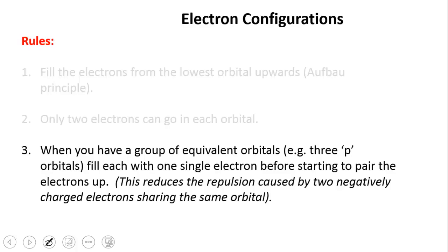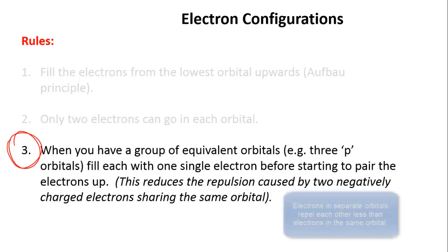The third rule for writing electron configurations is that when you have a group of orbitals with the same energy, like 3p orbitals together or 5d orbitals, the orbitals get filled with one electron each first and only then do the electrons start doubling up. The reason for this is that two negatively charged electrons occupying the same space will repel each other, which is unfavorable. This repulsion is minimized if you spread the electrons out.